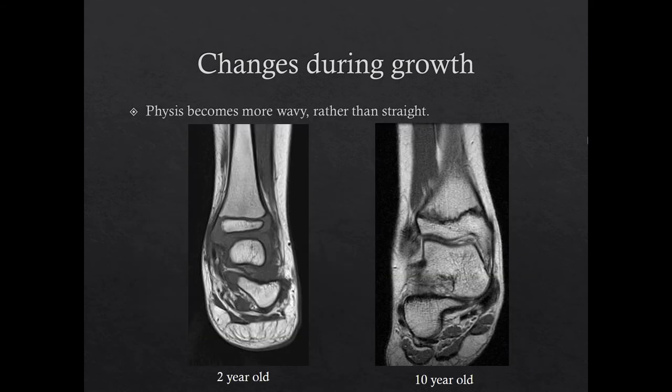The appearance of the physis may also change during growth. For example, the distal tibial physis initially has a straight contour, as seen here in this 2-year-old. During growth, the distal tibial physis develops an undulating, wavy contour, which can be seen on both plain film and MRI, as in this 10-year-old. The prominent anteromedial superior extension of the physis in the distal tibia has also been referred to as Kump's bump on a plain film.